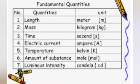Fundamental physical quantities that do not depend upon other quantities are called fundamental physical quantities. There are seven fundamental physical quantities: length, mass, temperature, time, electric current, luminous intensity, and amount of substance.